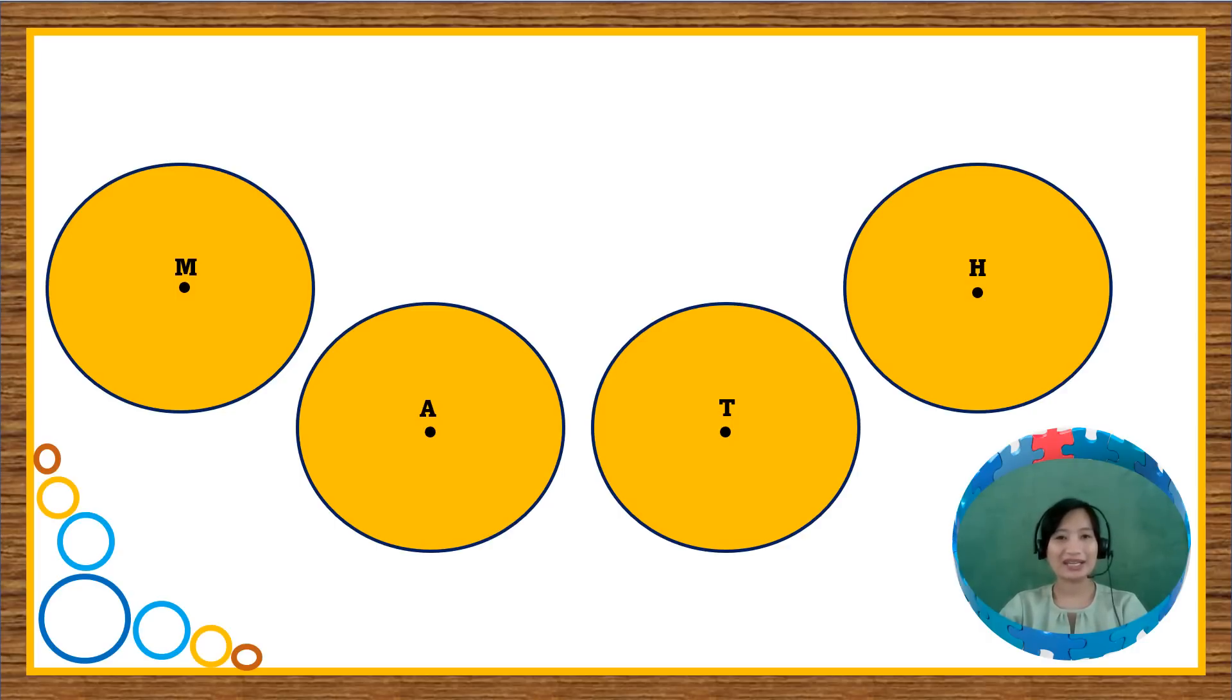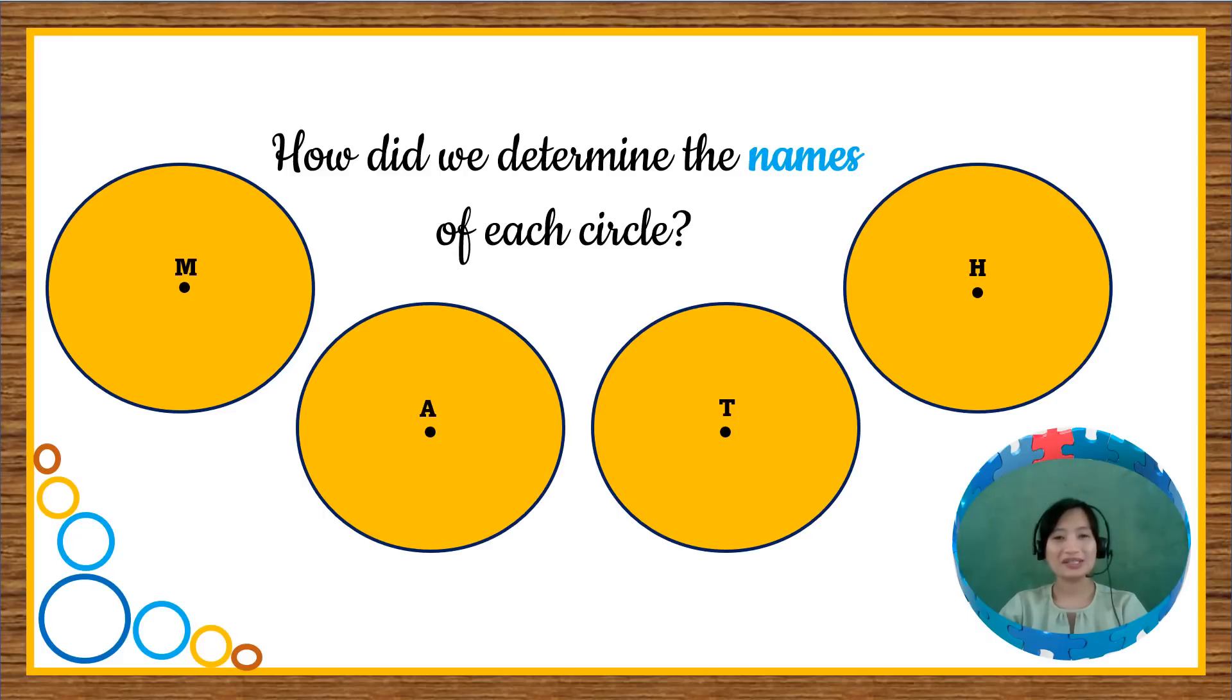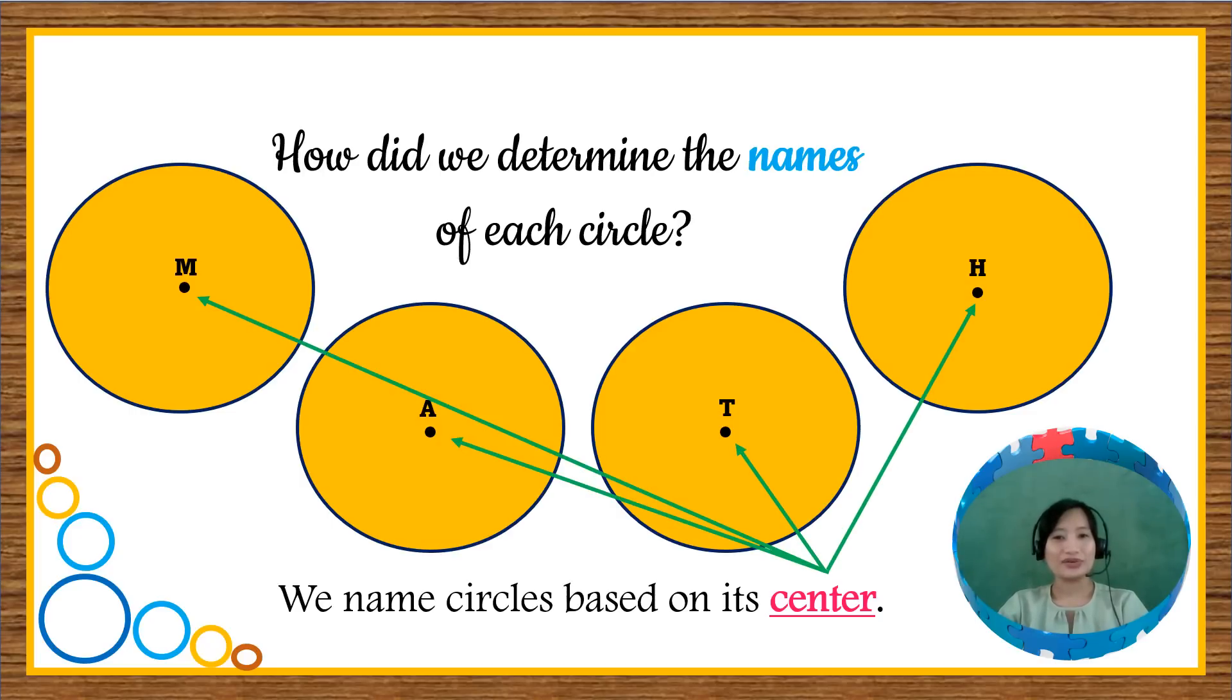The question is, how did we determine the names of each circle? You're right! We name circles based on its center. So the letters at the center, or the points, the name of the points at the center, is representing the name of each circle.